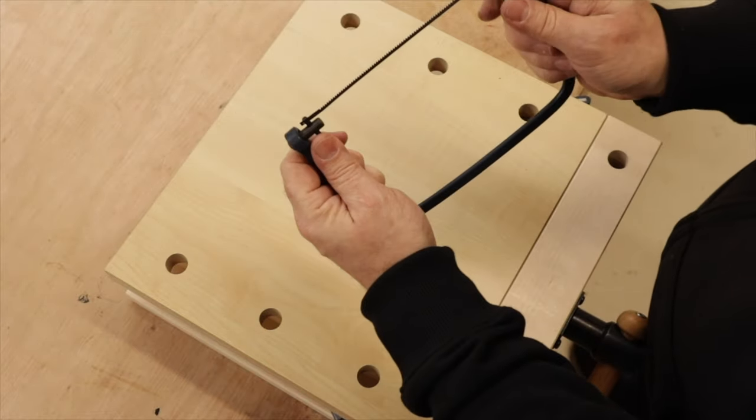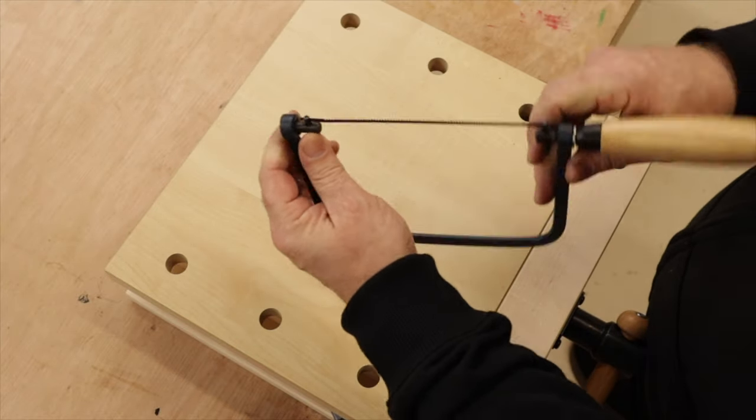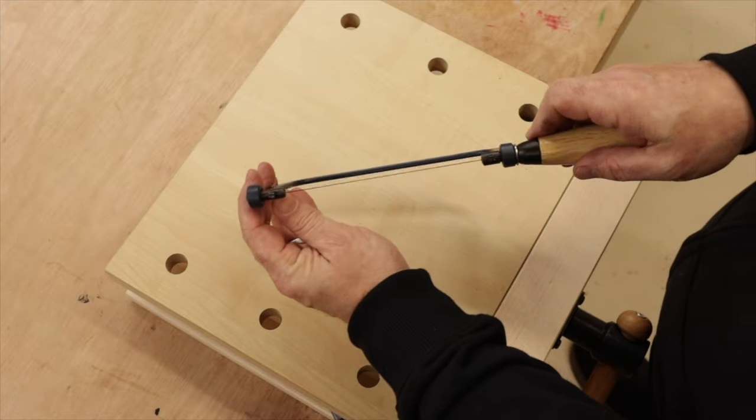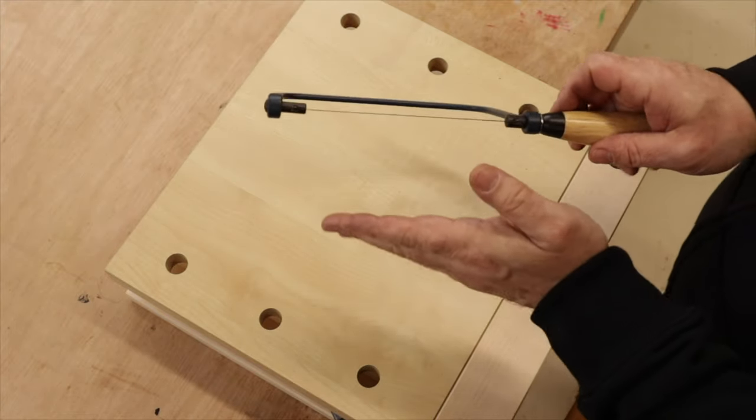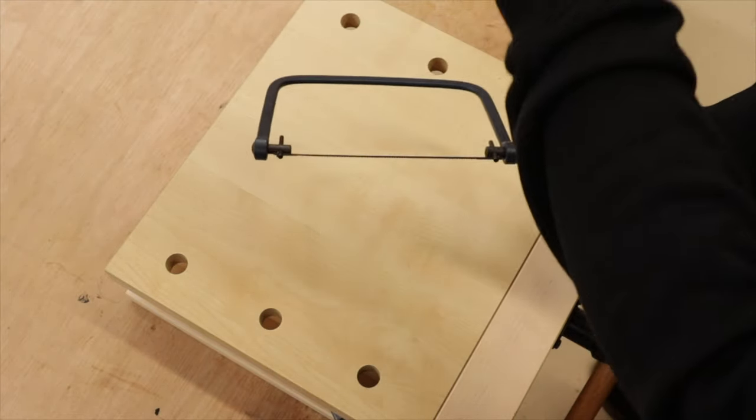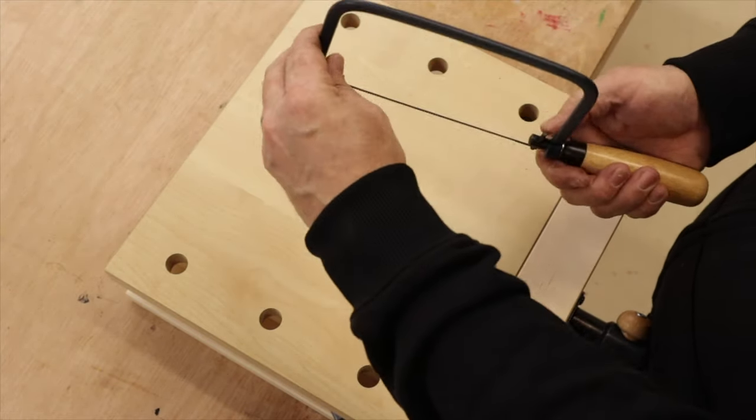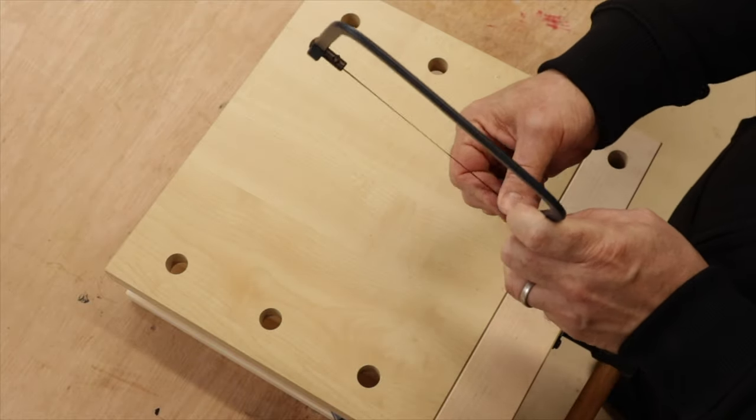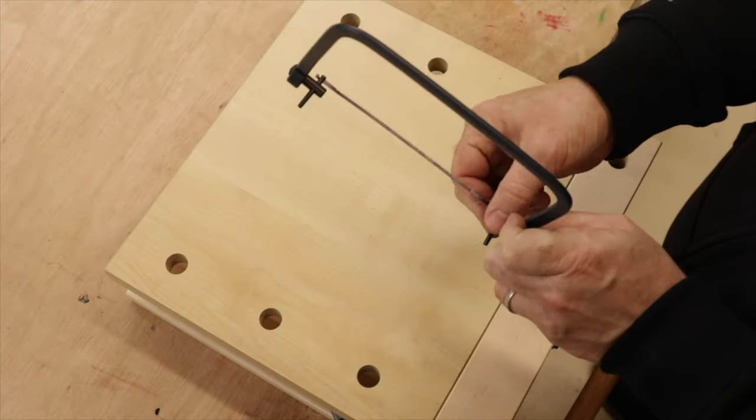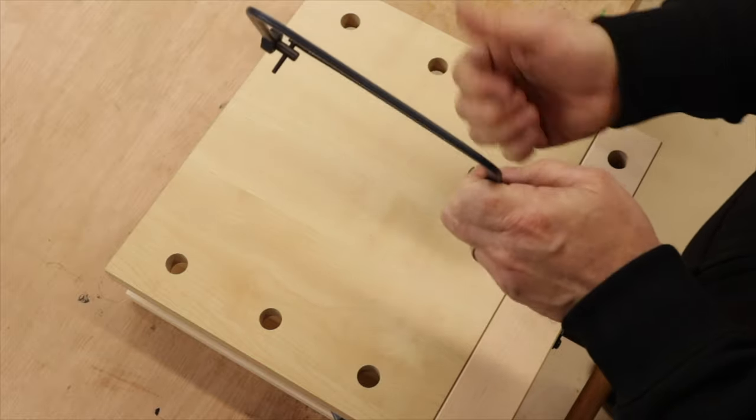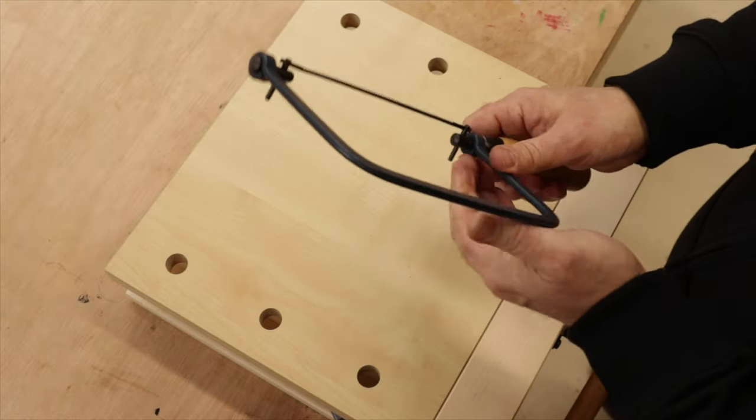Now once we get near the end, we want to make sure that the blade is lined up like this, nice and straight. Now we can set this blade to be coming out this way or coming out this way. And so for the demonstration purposes on this, I'm going to tip the blade actually to the left, so the blade is actually pointing to the right, and then I'm going to tighten everything up.